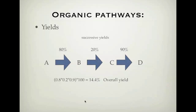So if you can think about it, it's actually 0.8 times 0.2 times 0.9. So that's my overall yield. Multiply all the percentages together, multiply by 100, that gives you your yield.